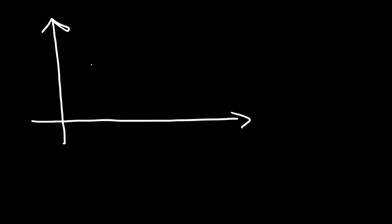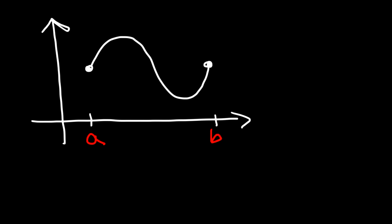In this video I want to talk about continuity and differentiability. Let's start with the basic idea behind continuity. Looking at this graph, would you say it's continuous or discontinuous on the interval from A to B? As you can see, there are no breaks, no jumps — this graph connects from A to B with no missing points. So we could say that f of x is a continuous function from A to B.